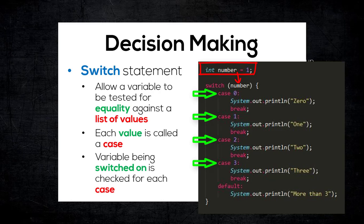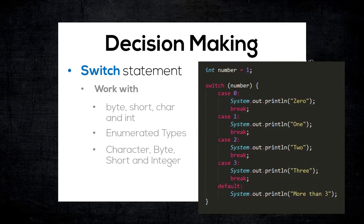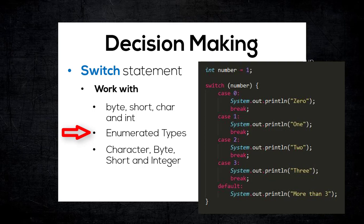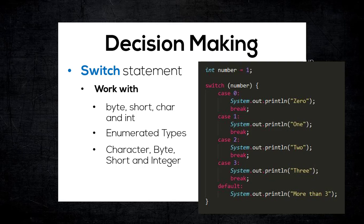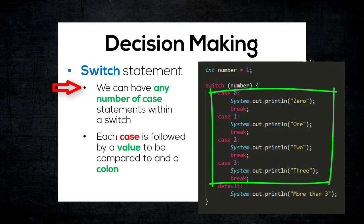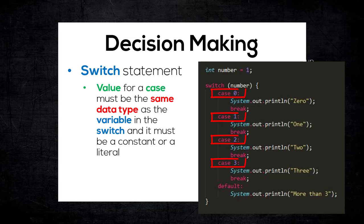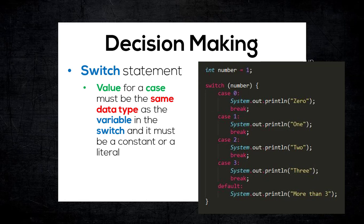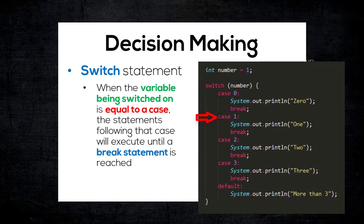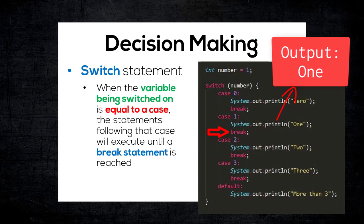However, there are a couple of rules to take note of when using a switch statement. A switch statement can work with byte, short, char, and int primitive data types. It also works with enumerated types, String, as well as a few special wrapper classes for certain primitive types, such as Character, Byte, Short, and Integer. Don't worry if you don't understand some of the types mentioned, as we will go through some of them in later episodes. We can have any number of case statements within a switch. Each case is followed by the value to be compared to and a colon. The value for a case must be the same data type as the variable in the switch and must be a constant or a literal. When the variable being switched on is equal to a case, the statements following that case will be executed until a break statement is reached.